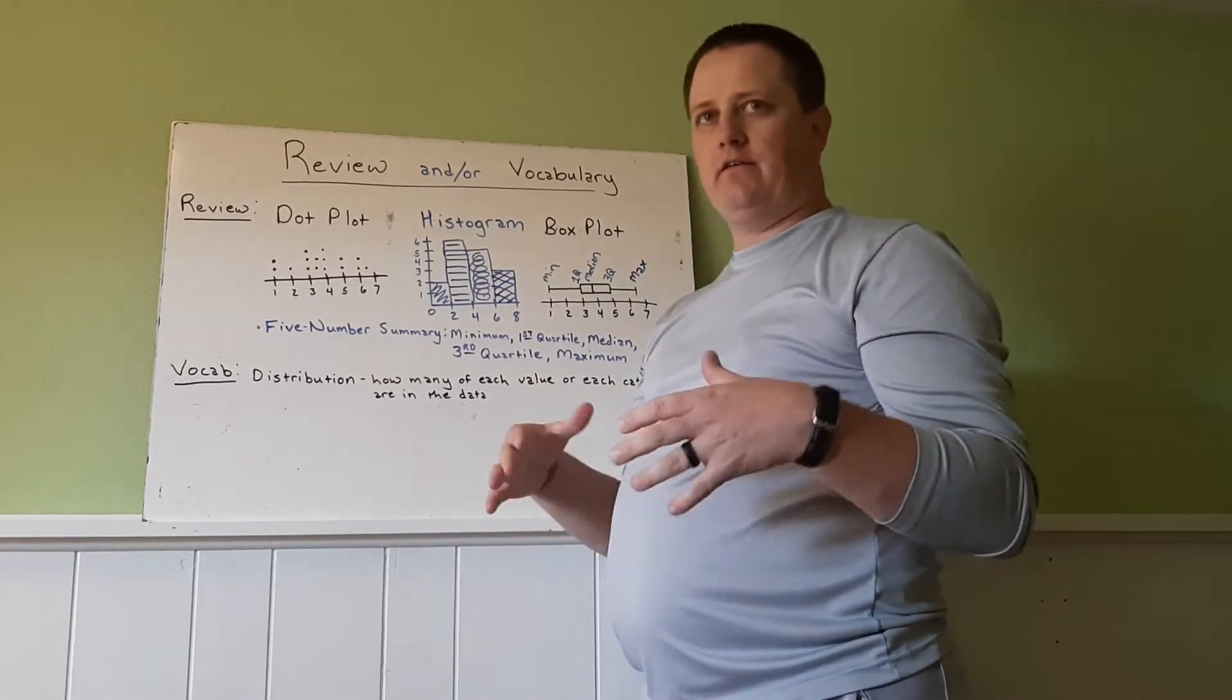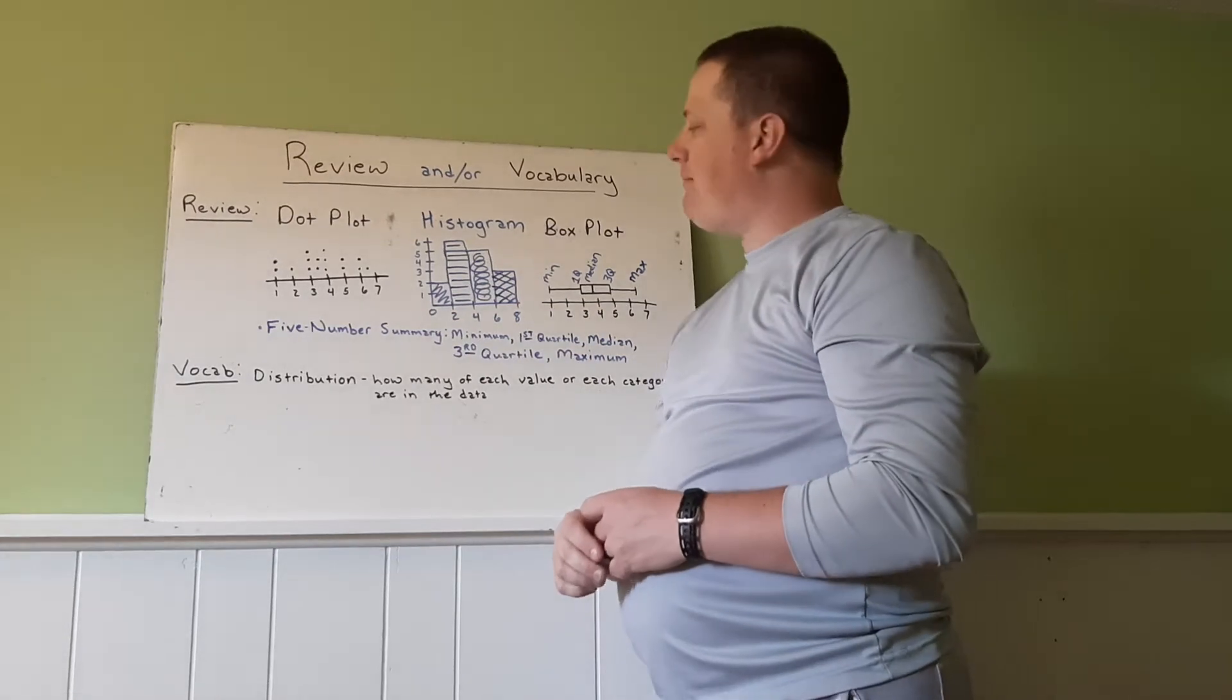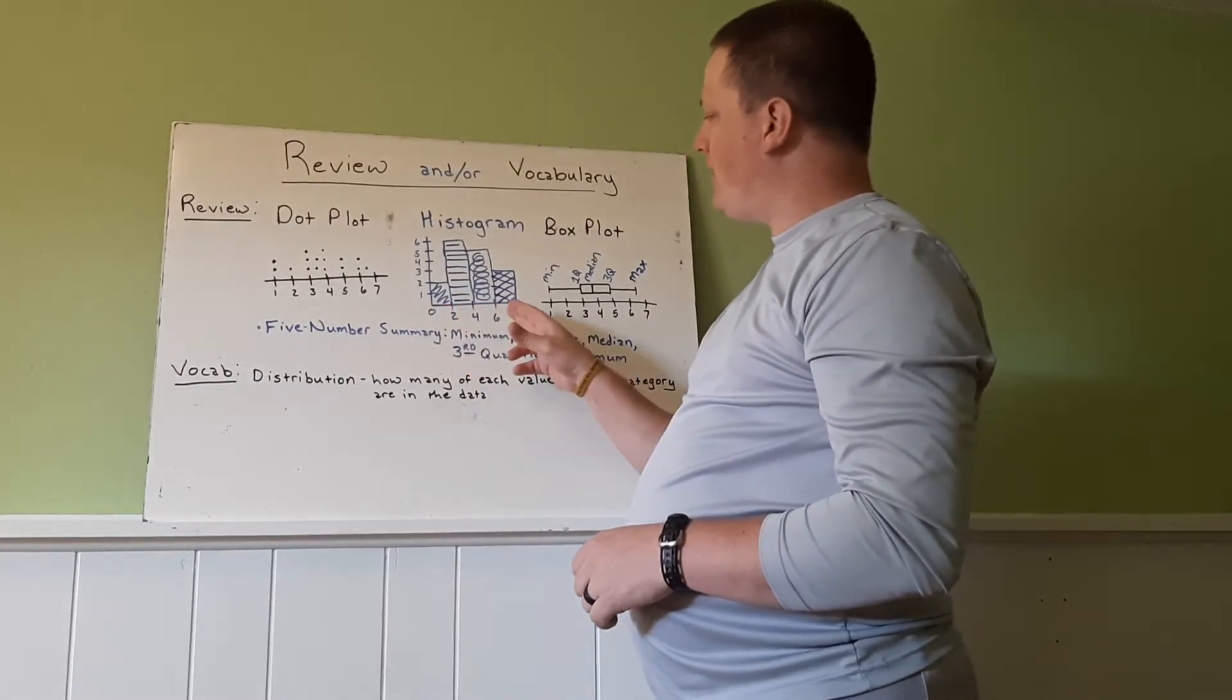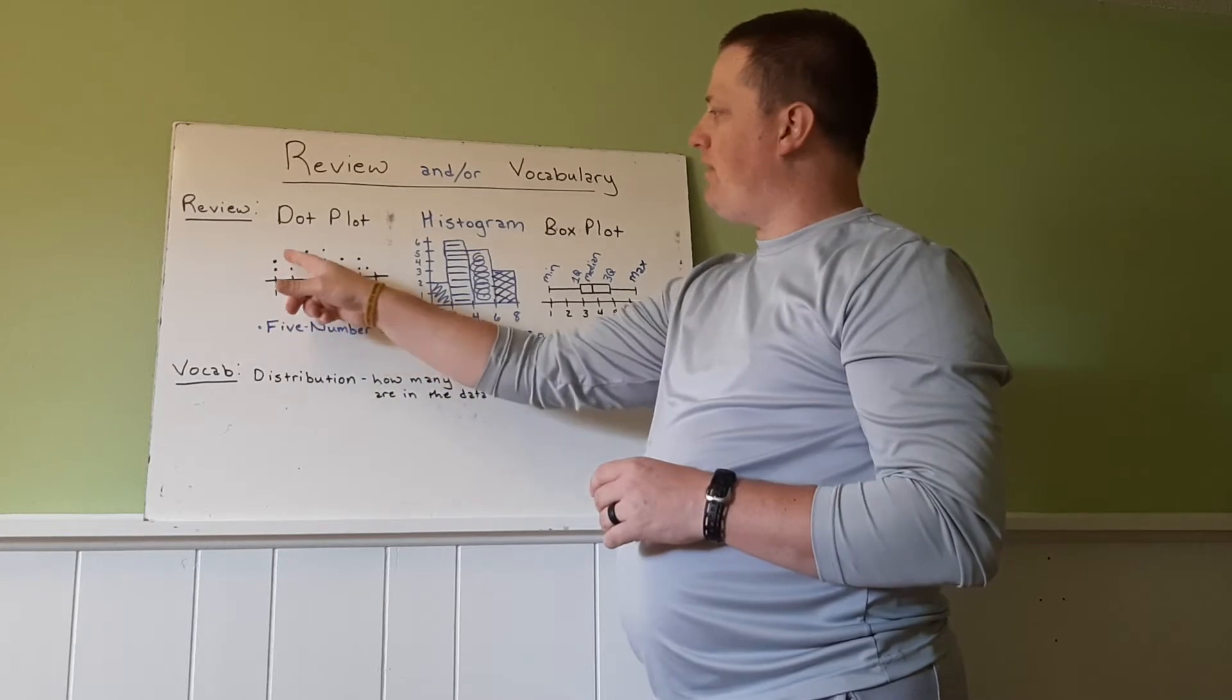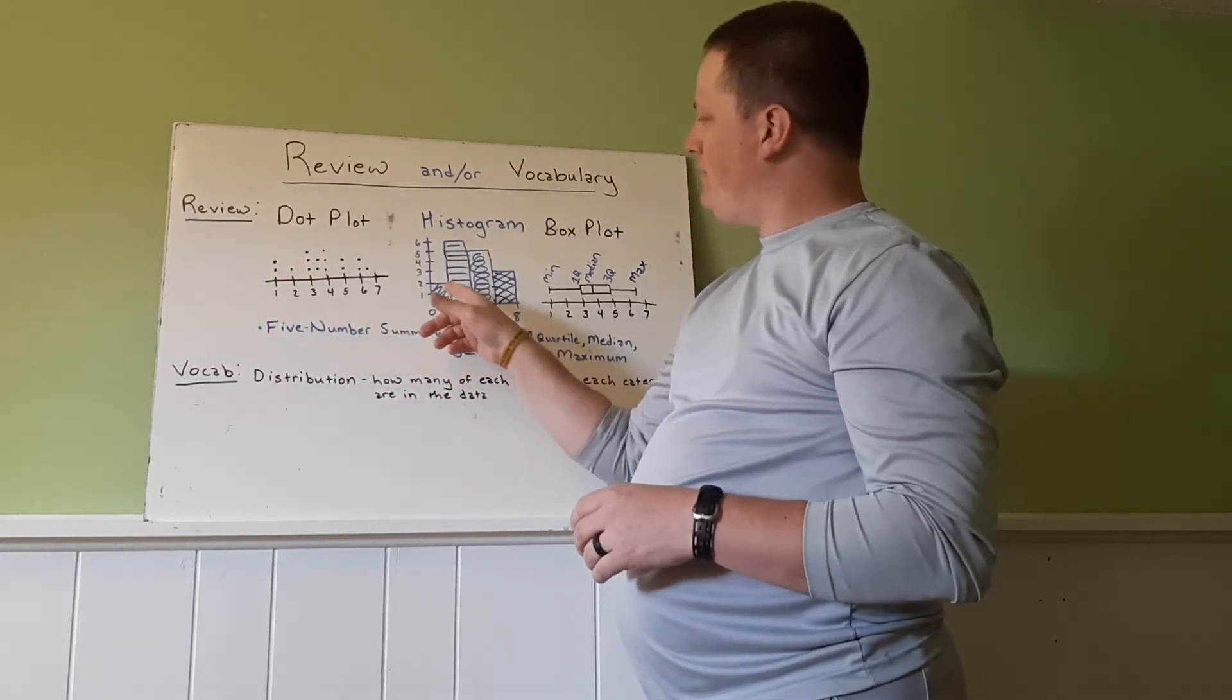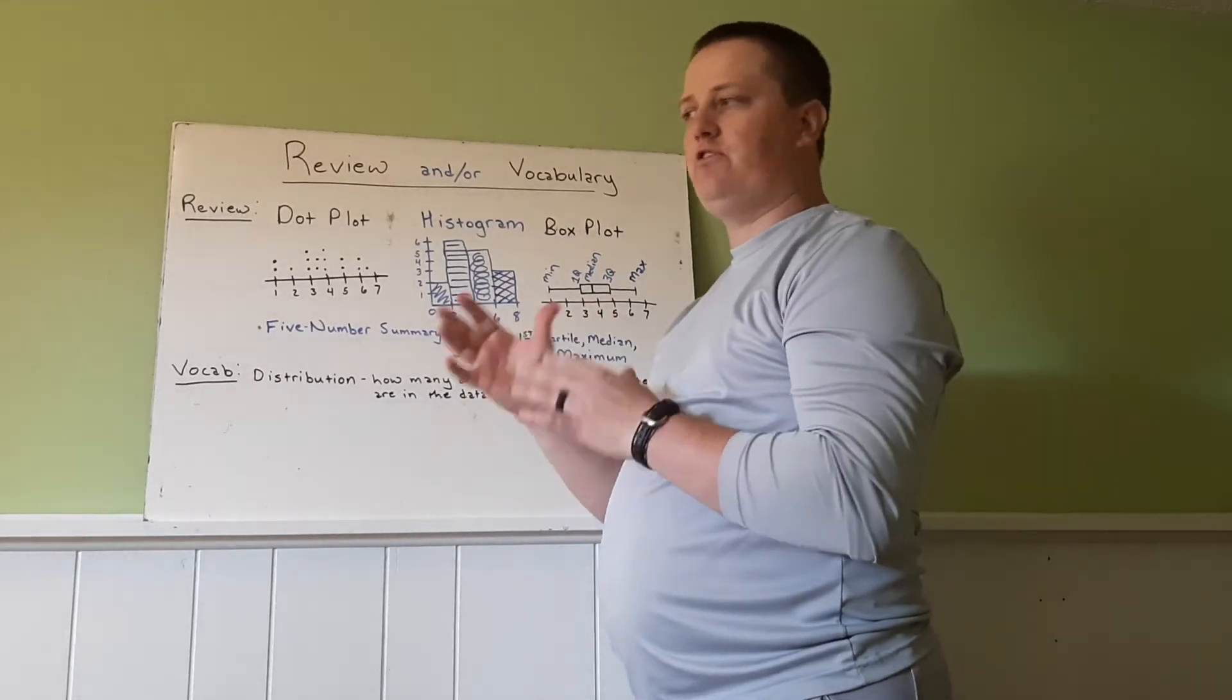We have a histogram. This is a little bit more complex. This is the same data as the dot plot, just put in a different form. So here we're counting by twos. So the bar shows all the numbers here between zero and two are all the numbers less than two. So we have two ones. So that one goes up two.